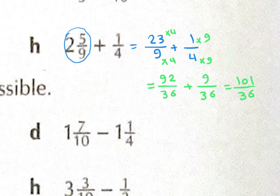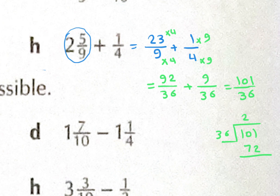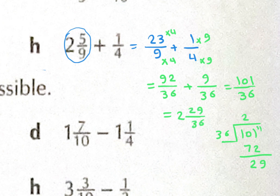Can you write as a mixed number? How many 36s in 101? 2 times 36 is 72. Subtracting: 101 minus 72 requires borrowing — 11 minus 2 is 9, 9 minus 7 is 2, giving remainder 29. So the answer is 2 and 29 over 36. You can use your calculator or do it by hand.